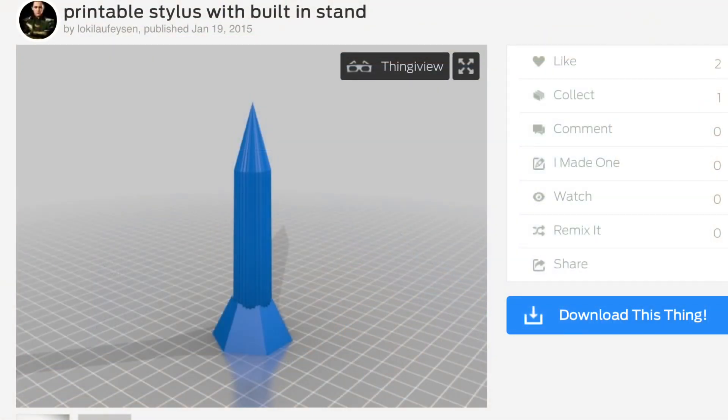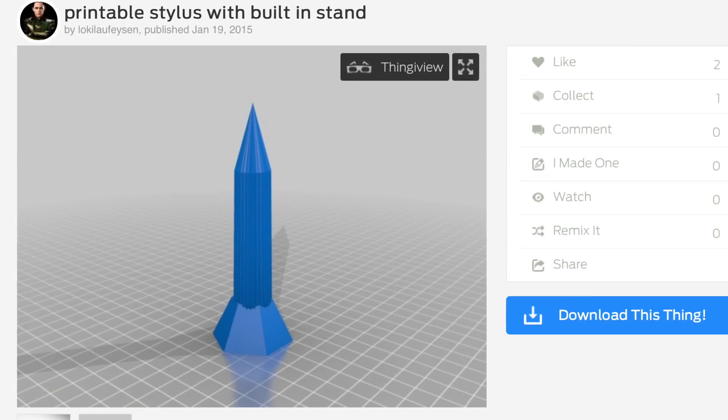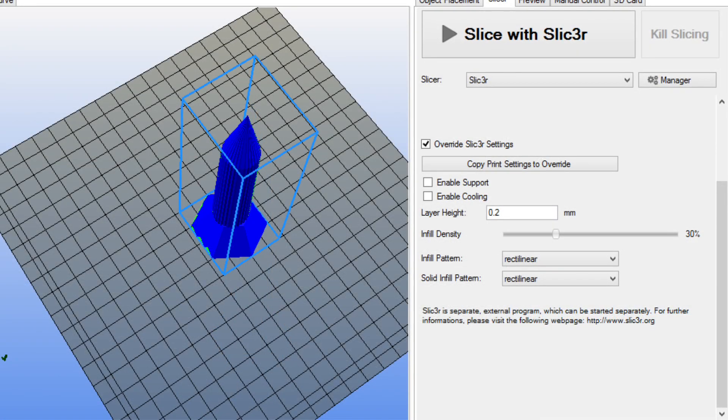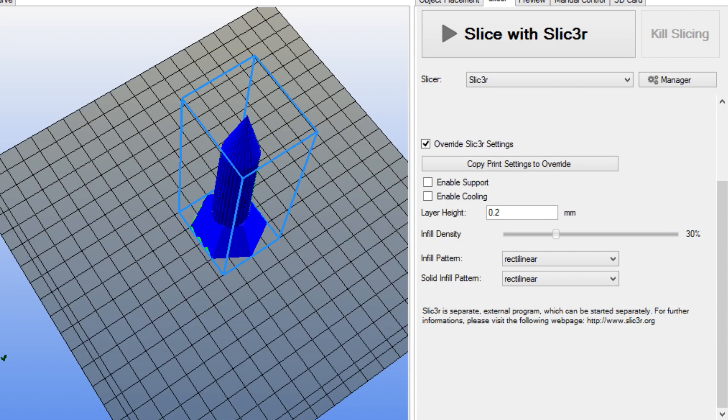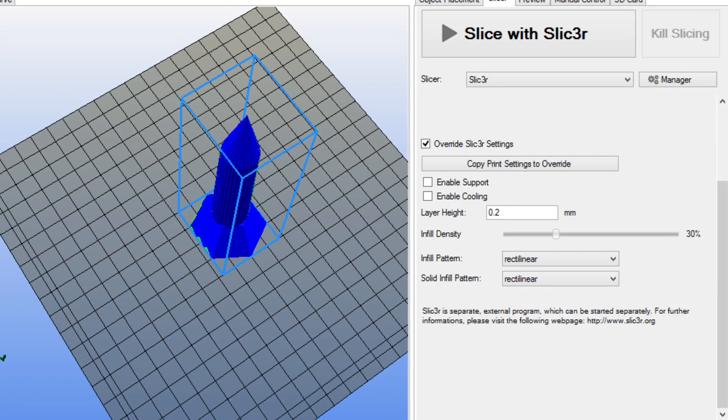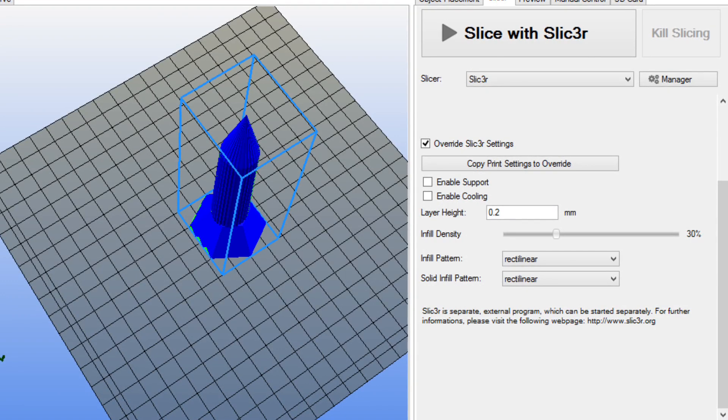So I went back to Thingiverse and I found this printable stylus from user Loki and I sent that to the printer with the same settings. Now I didn't want the pointed top but I figured I could just cut sections off until I get to the width I wanted.